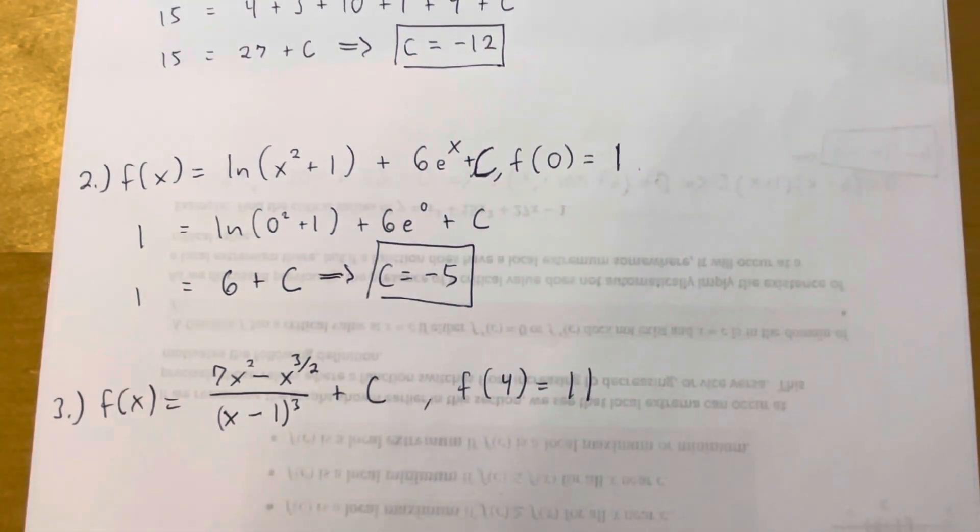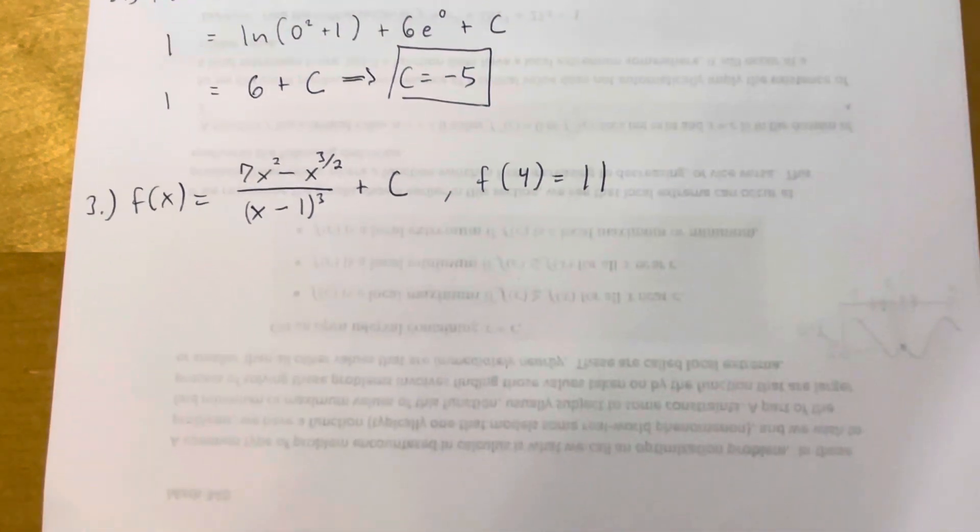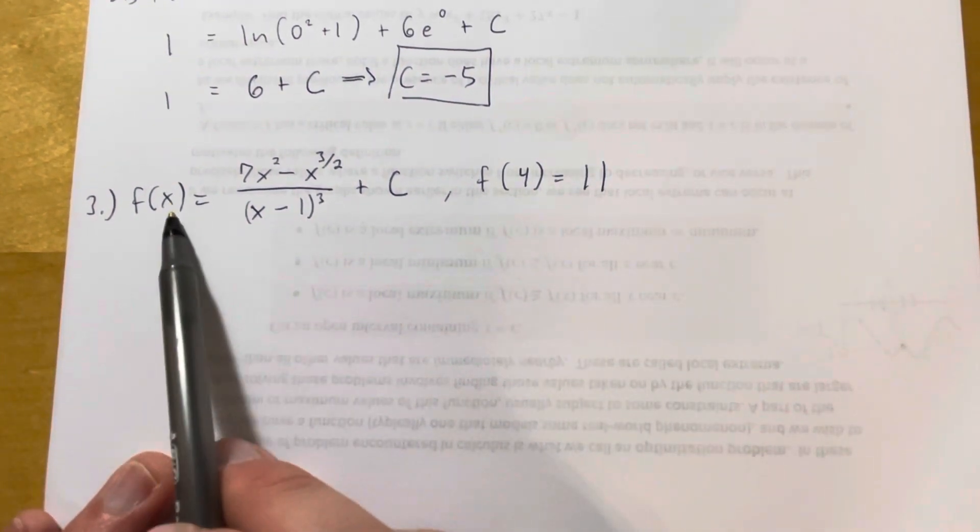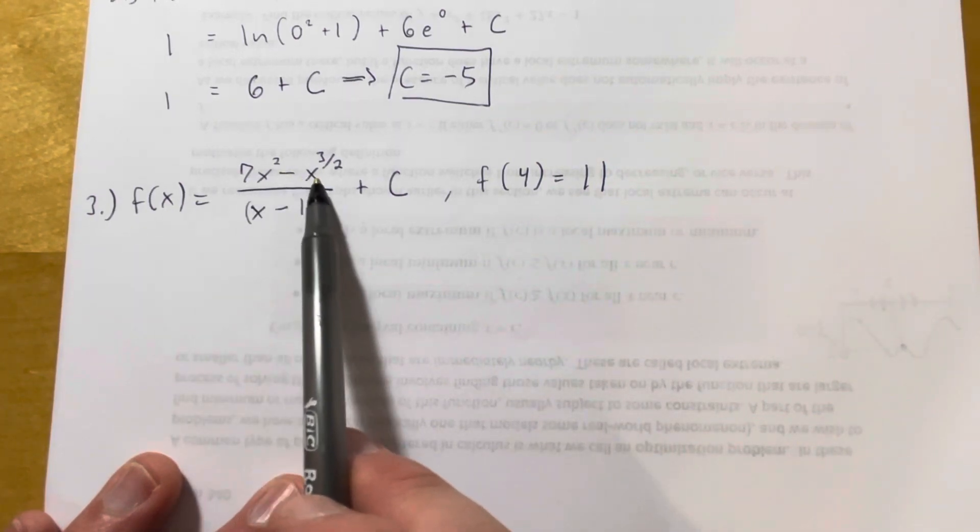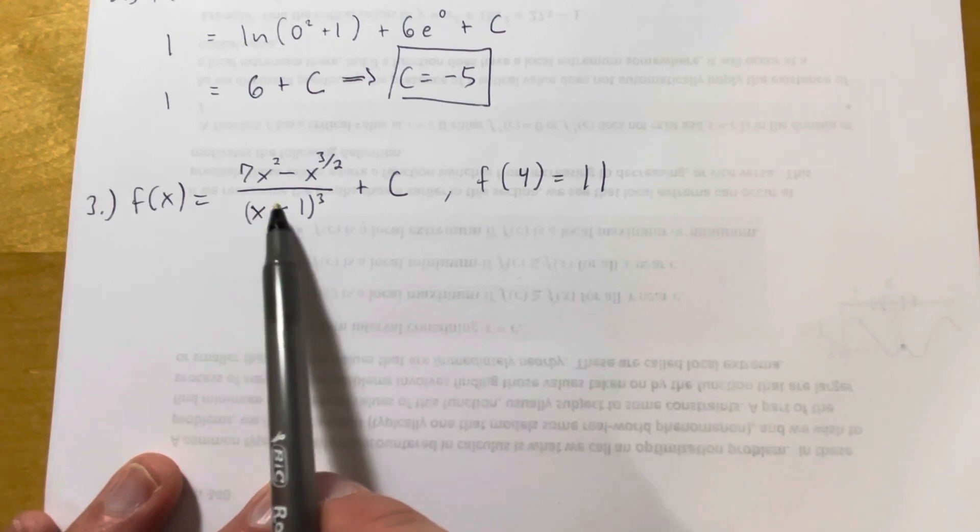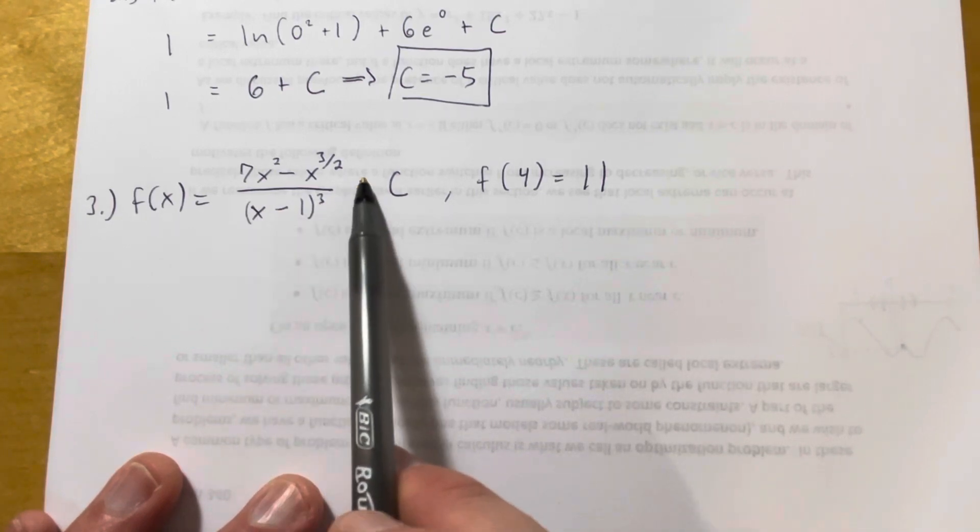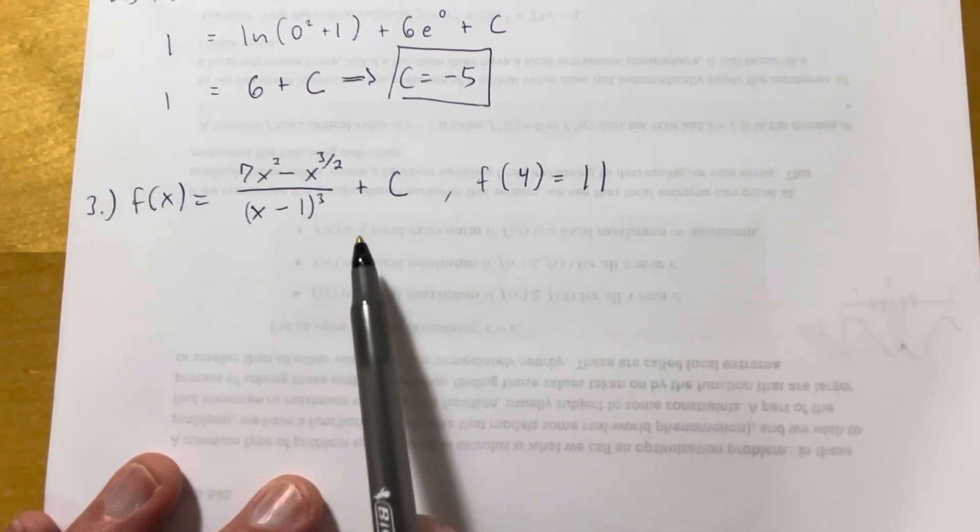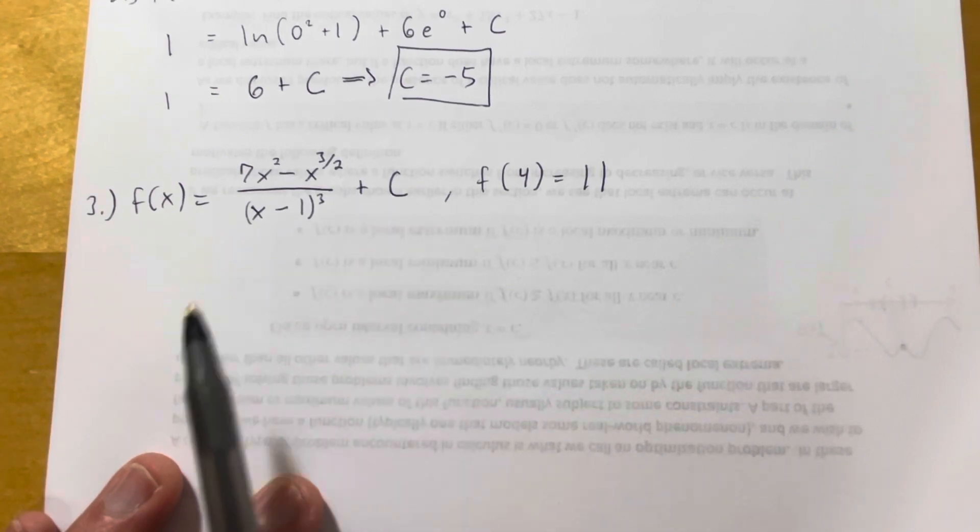Done. Super easy, right? One last example. Nothing really fancy about this one either. It's just a different type of function, but we're doing the same thing to it. So f of x is equal to 7x squared minus x to the 3 halves power over the quantity x minus 1 cubed. So I have this big rational looking expression over here, plus C over here.